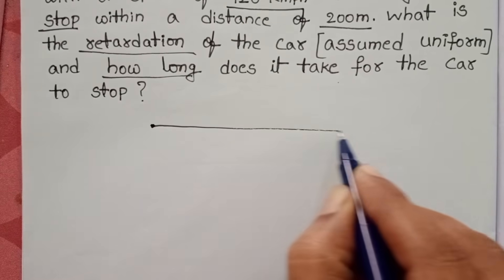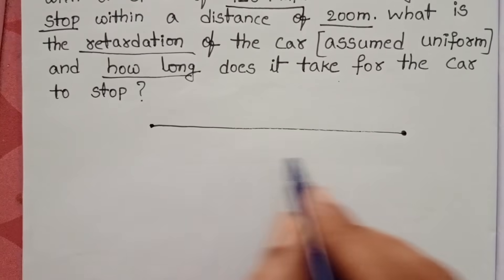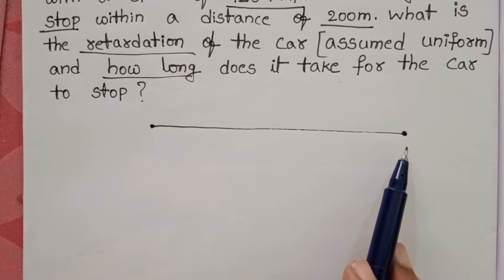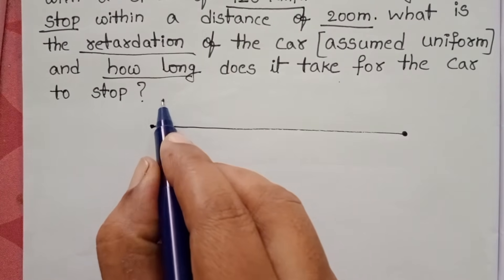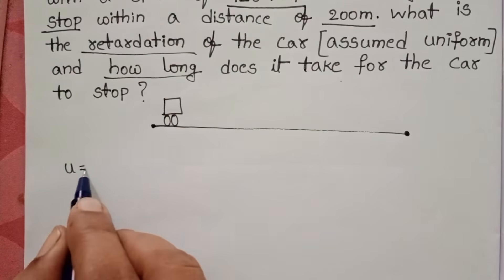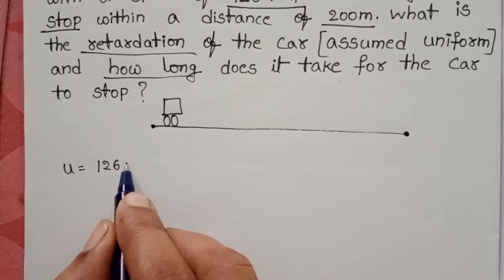In the given problem, initially a car is moving along a straight highway. The initial speed of the car is 126 km per hour.